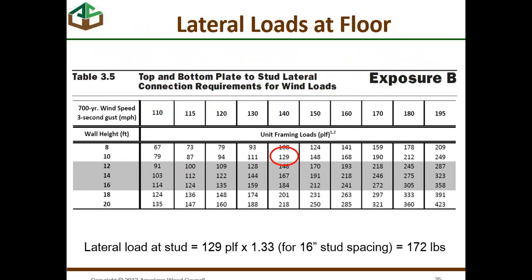The lateral loads at the floor system come from Table 3.5, basically from the collection of wind to the wall surface perpendicular to it. The lateral load at that connection is 129 pounds per linear foot for a wall height of 10 feet at 140 mph wind speed. The lateral load at the stud is calculated and adjusted for a 16-inch stud spacing. Lateral loads at the bottom of the wall-to-floor connection are again in three directions.